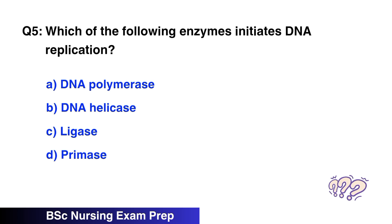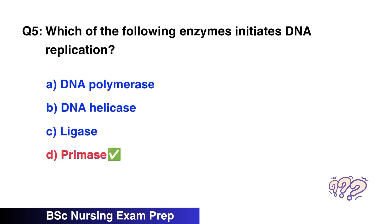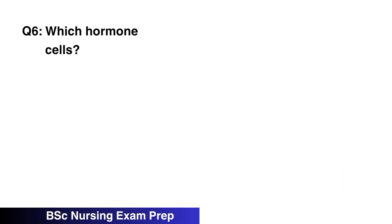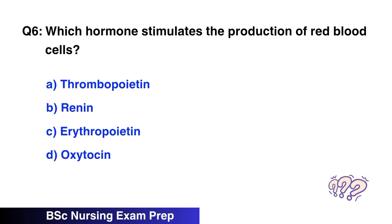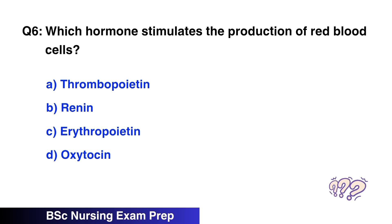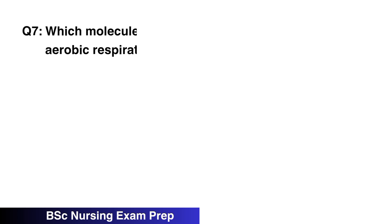Question number 5: Which of the following enzymes initiates DNA replication? The right option is D, primase. Question number 6: Which hormone stimulates the production of red blood cells? The right option is C, erythropoietin.